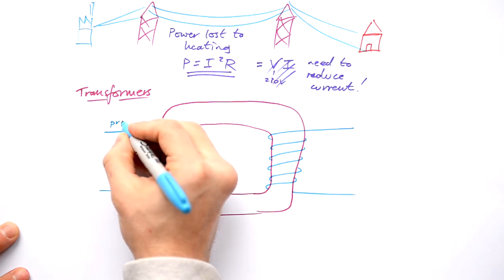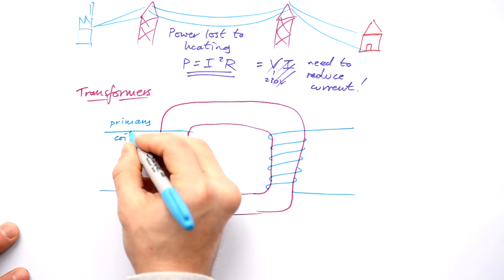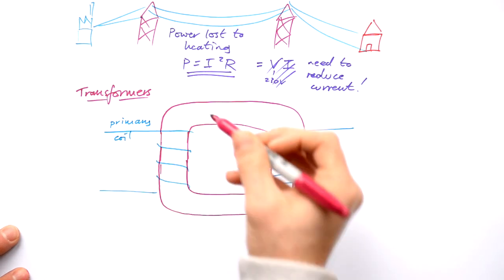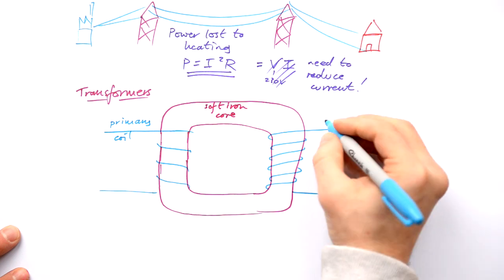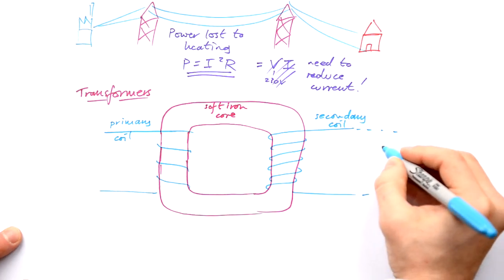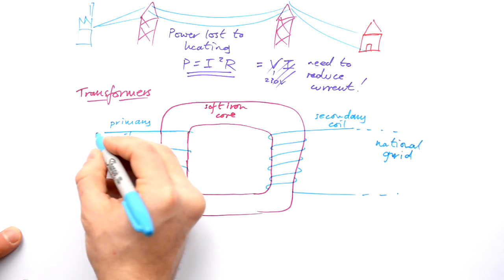What we have here is a primary coil wrapped around a soft iron core. And here we have our secondary coil. This goes off to the national grid, whereas this comes from the power station.